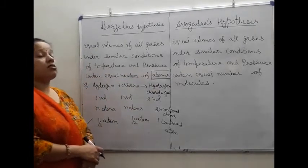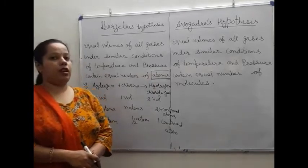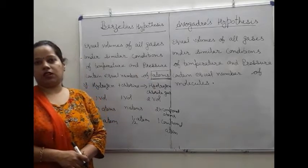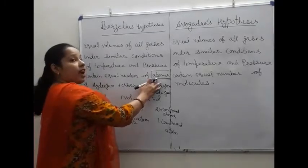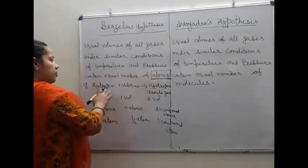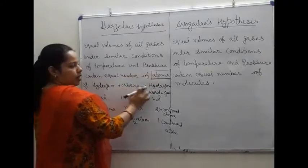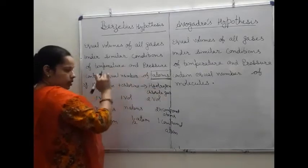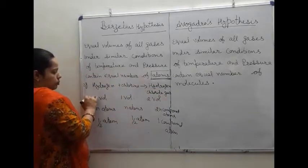If all gases are in equal volume and the same conditions of temperature and pressure, then all gases have an equal number of atoms present. For example, hydrogen gas combined with chlorine gas will form hydrogen chloride gas, according to Gay-Lussac's Law.